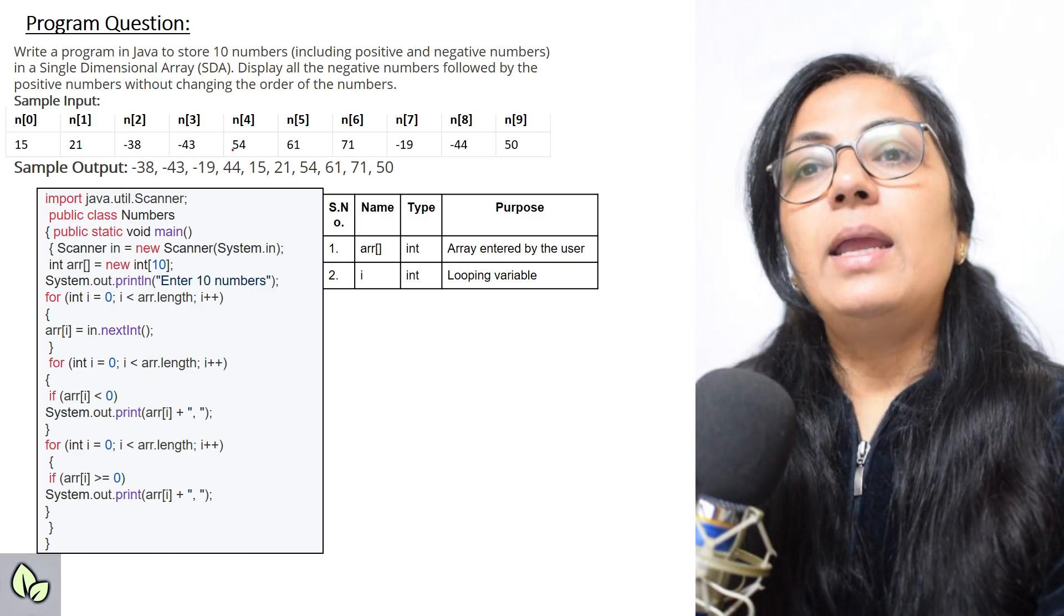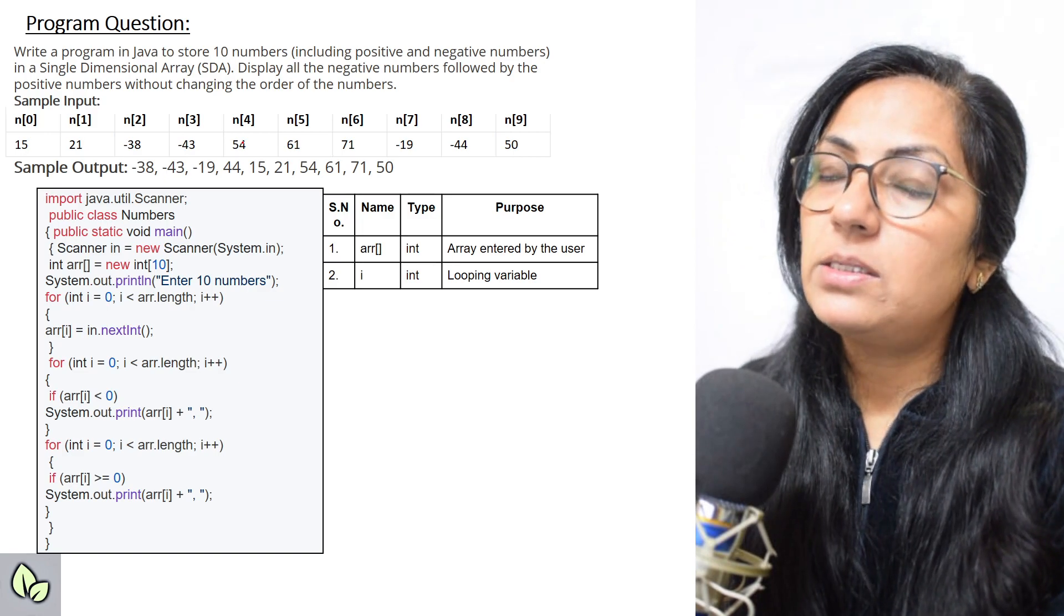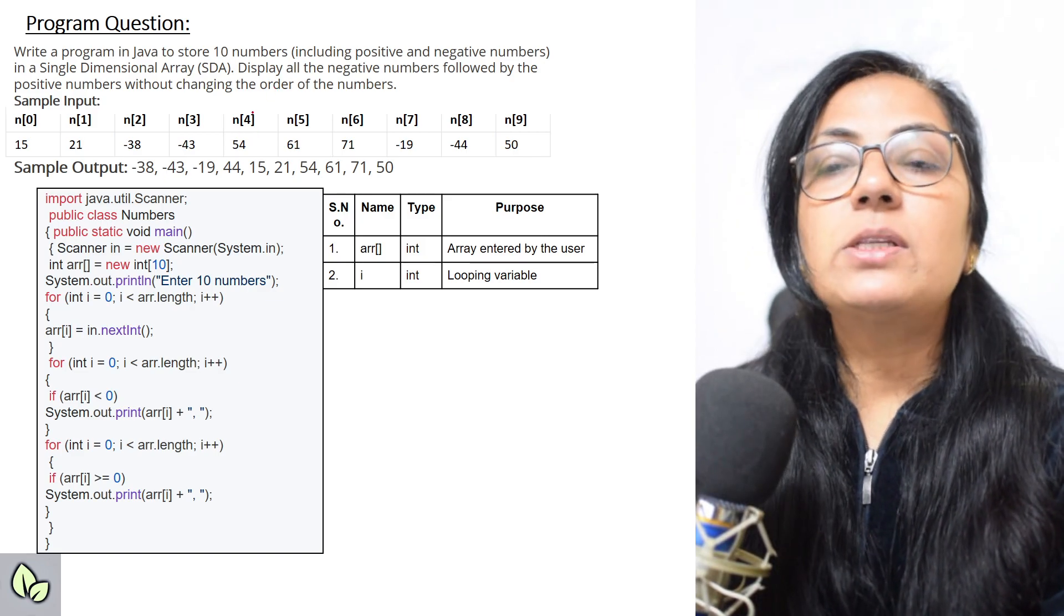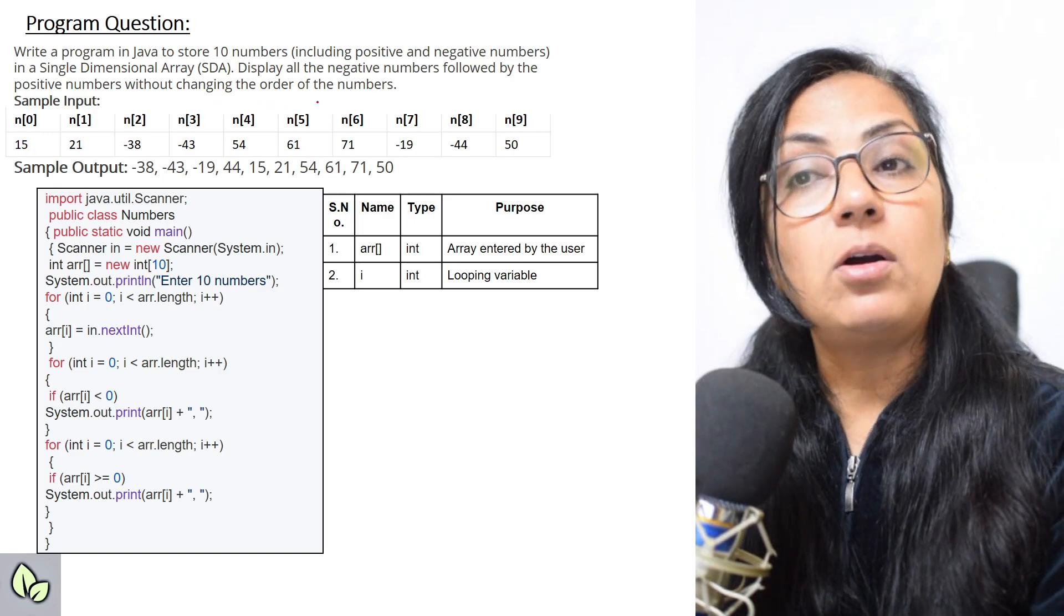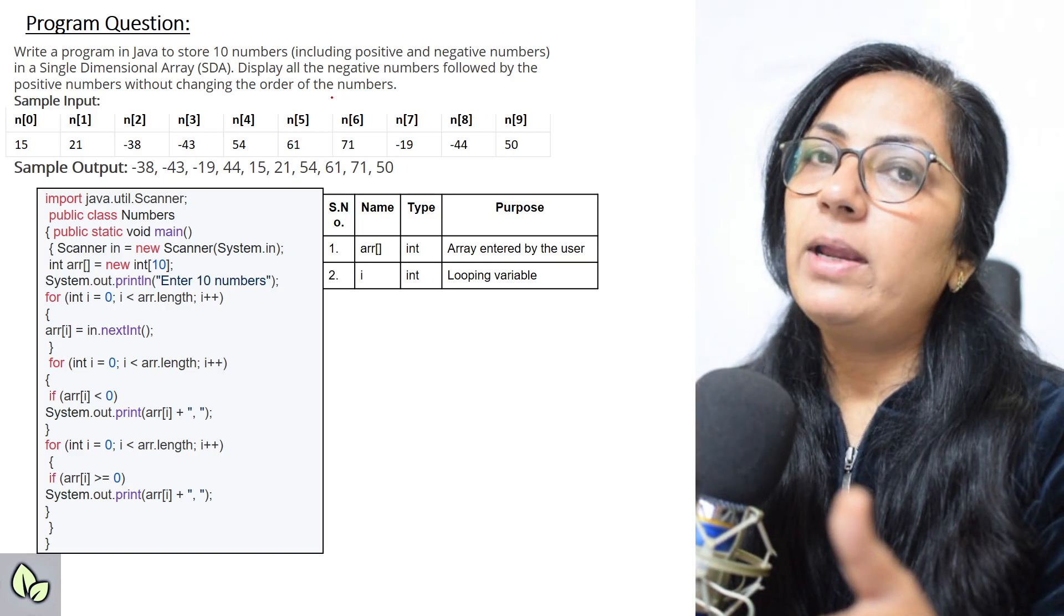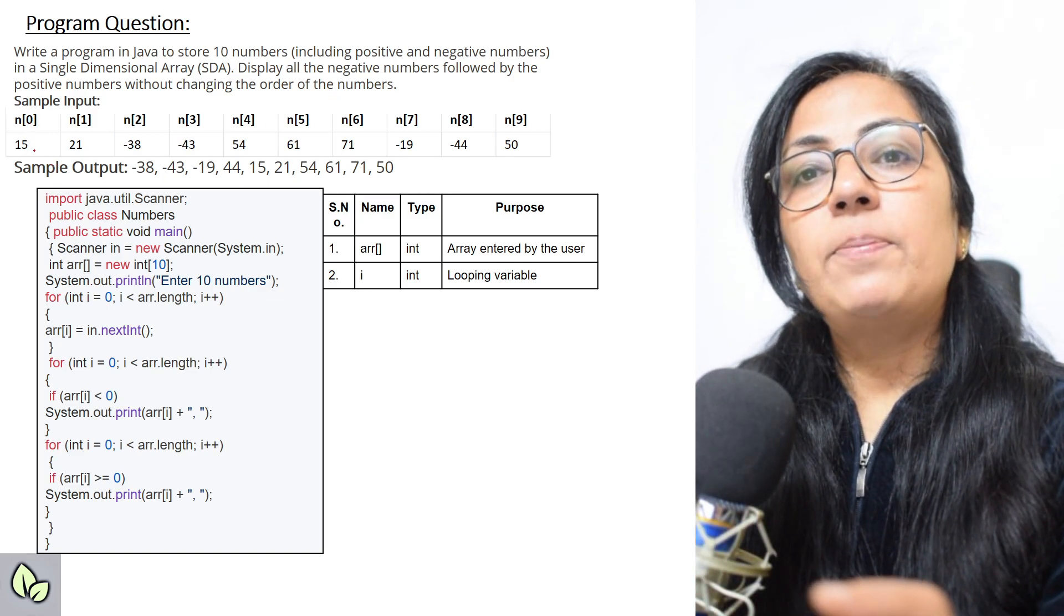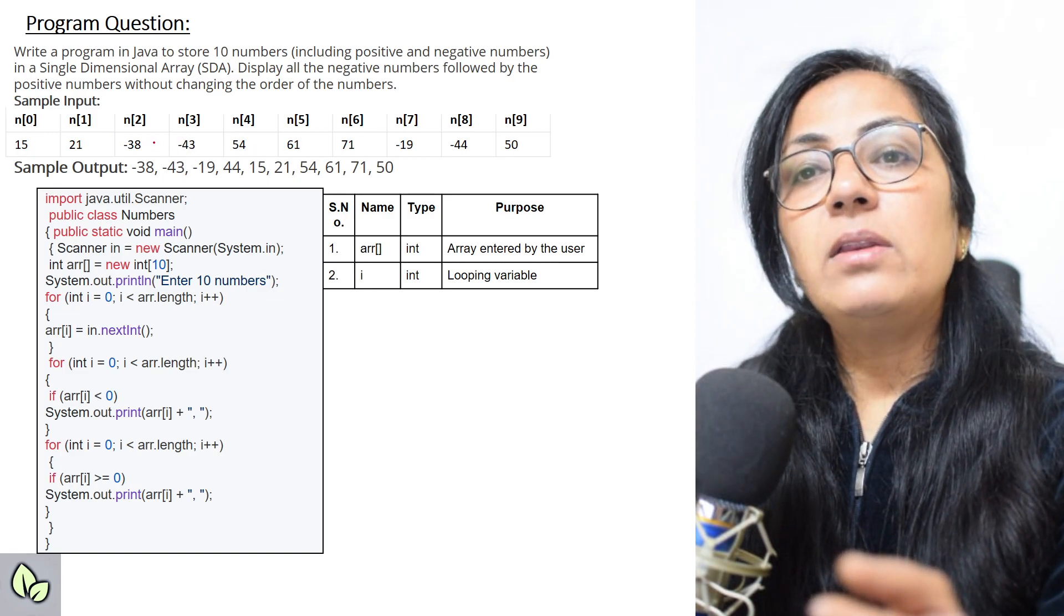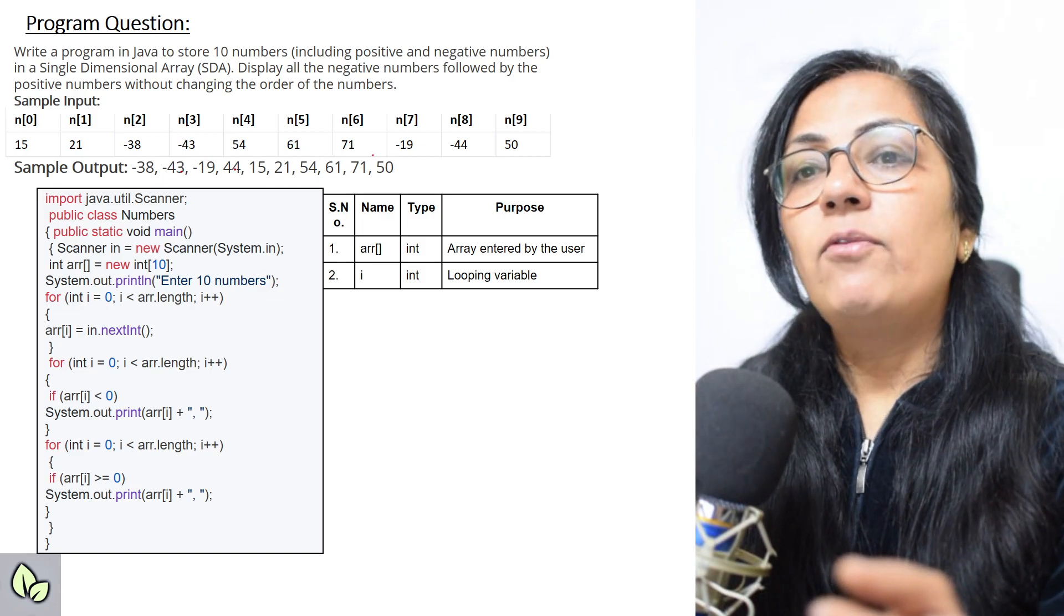Now we move on to the next question, our program question. Write a program to store 10 numbers, including positive and negative numbers. If it is not specified, user can enter positive or negative in a single dimensional array. Display all the negative numbers followed by the positive numbers without changing the order of the numbers. Whatever number in negative comes in which order, display that. Then positive number in which order is coming, display that. So suppose the input is 15, 21, minus 38, minus 43, 54. So negative, first minus 38, then minus 43, then minus 19, and minus 44.